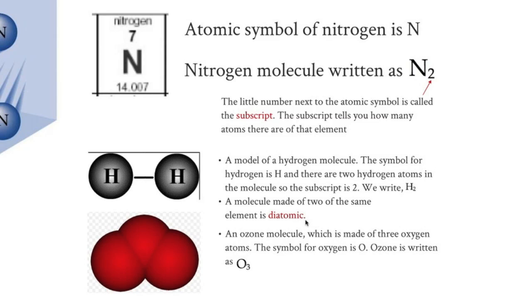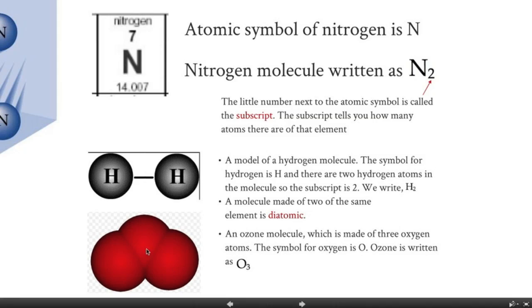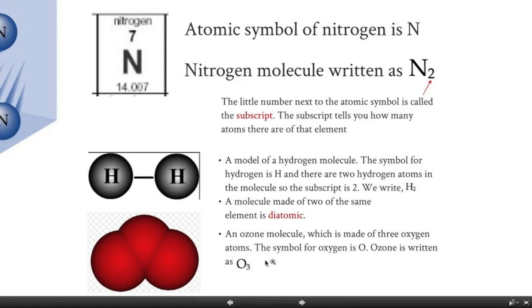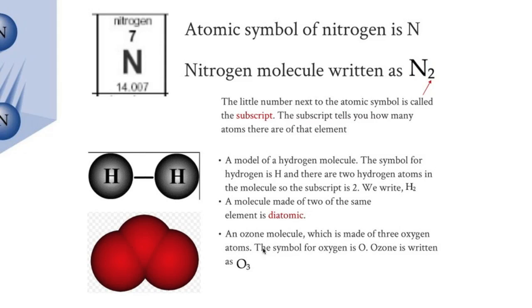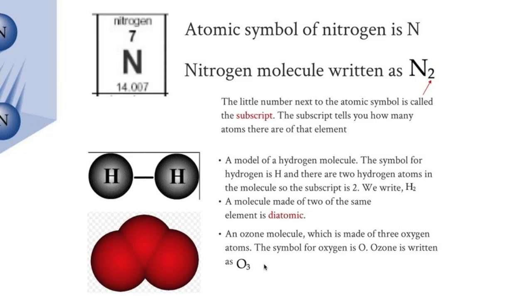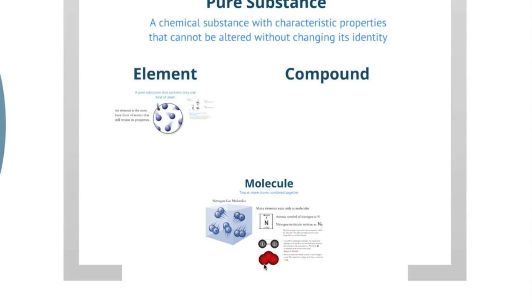This molecule, on the other hand, is not diatomic. This is an ozone molecule, which consists of three oxygen molecules bonded together. The symbol for oxygen is O, and ozone is written as O3. It is an element, it's only one kind of atom. It is a molecule because it has two or more atoms bonded together. But this is not a diatomic molecule.